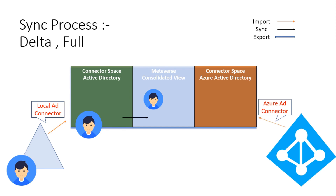The next process will be a sync from your Azure AD connector space to the metaverse. For this scenario, since there is no reference for this user object, there will be no changes in stats on either the metaverse or connector space, though the sync process will complete. The last and final step will be the export on the Azure AD connector, which will create an image of this user object in the connector space of Azure AD and export it to Azure AD.